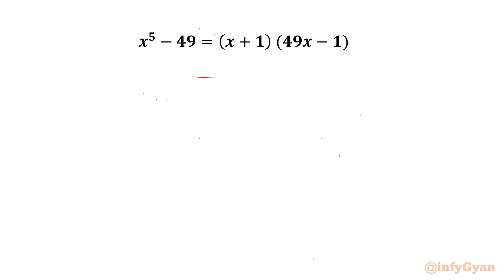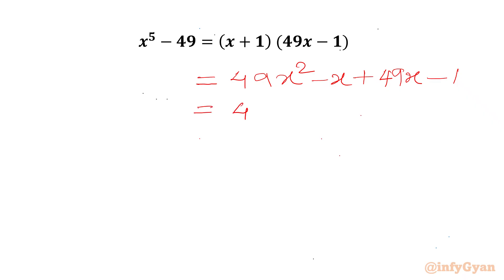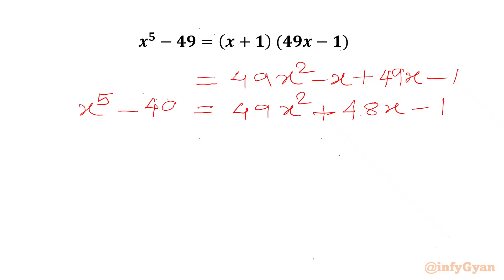I will expand our RHS. So I can write 49x squared minus x plus 49x minus 1. This will give us 49x squared plus 48x minus 1. And our LHS is x to the power 5 minus 49.